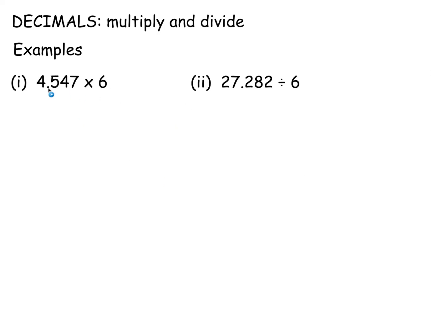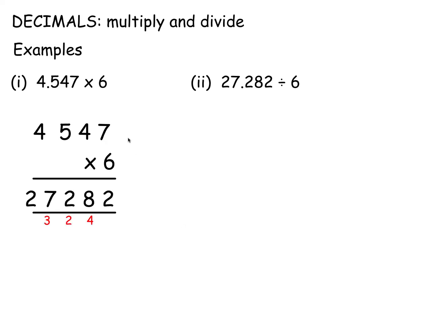For multiplication, ignore the decimal point. Do 4, 5, 4, 7 times 6: 6 times 7 is 42 — put down 2, carry 4, and so on. That's a normal multiplication. Then, what about the decimal point? The decimal point is 3 places in from the right, so you put it 3 places in from the right in your answer.